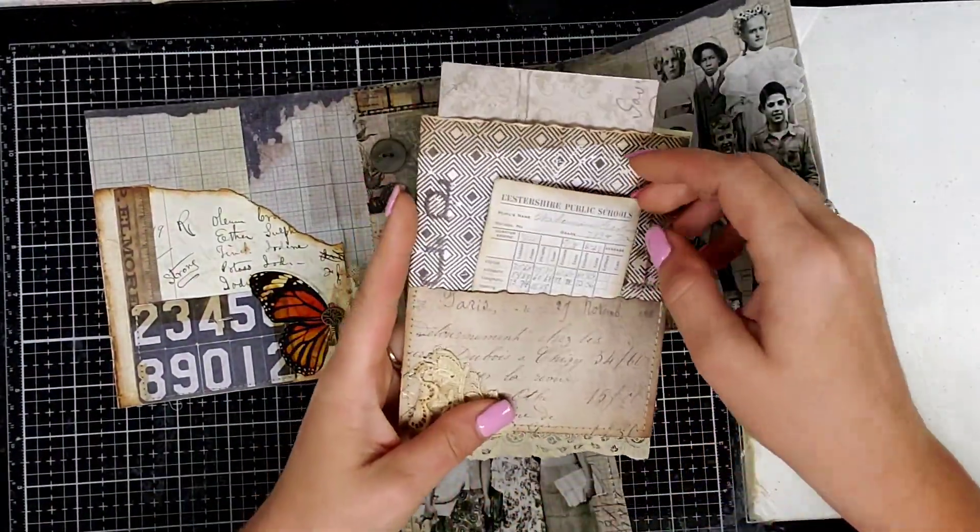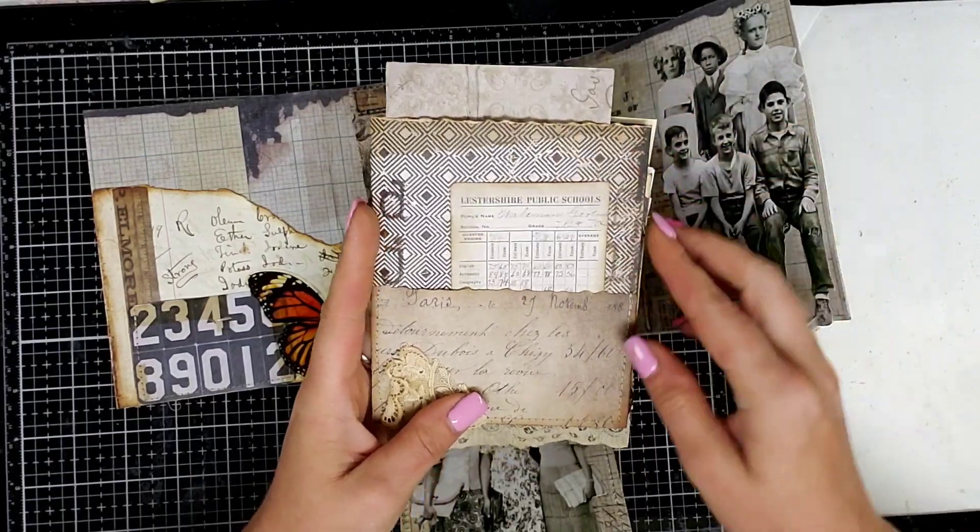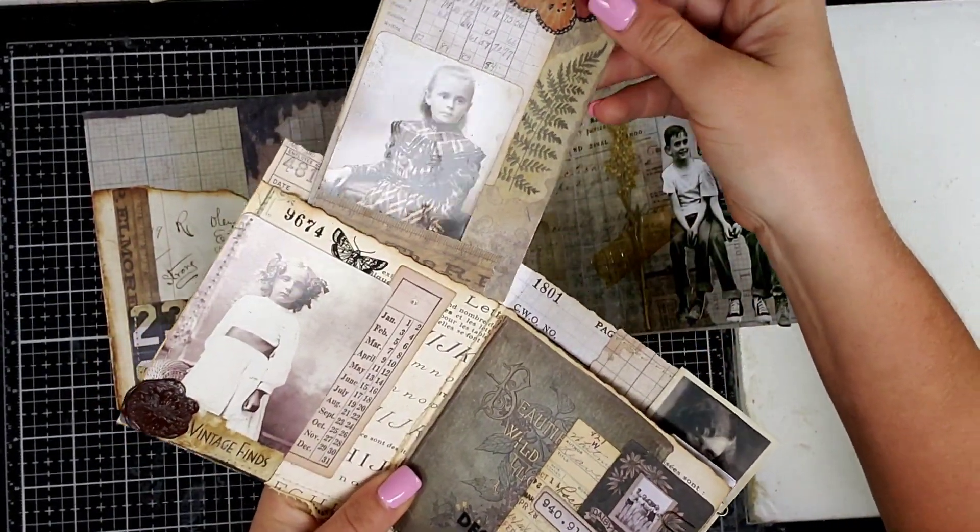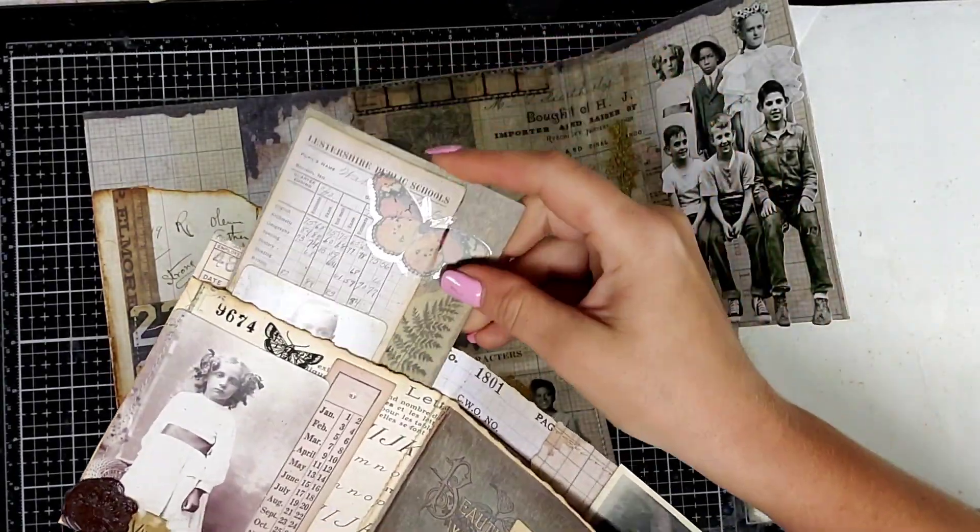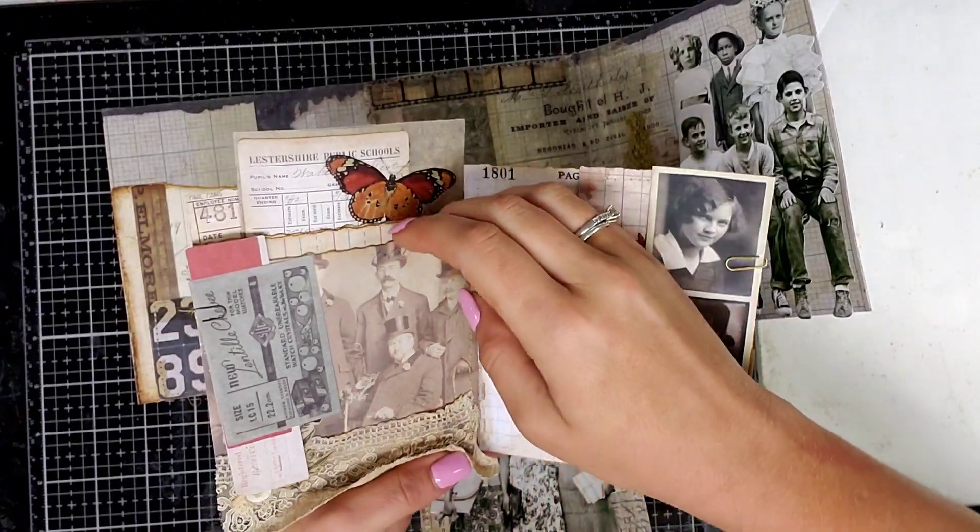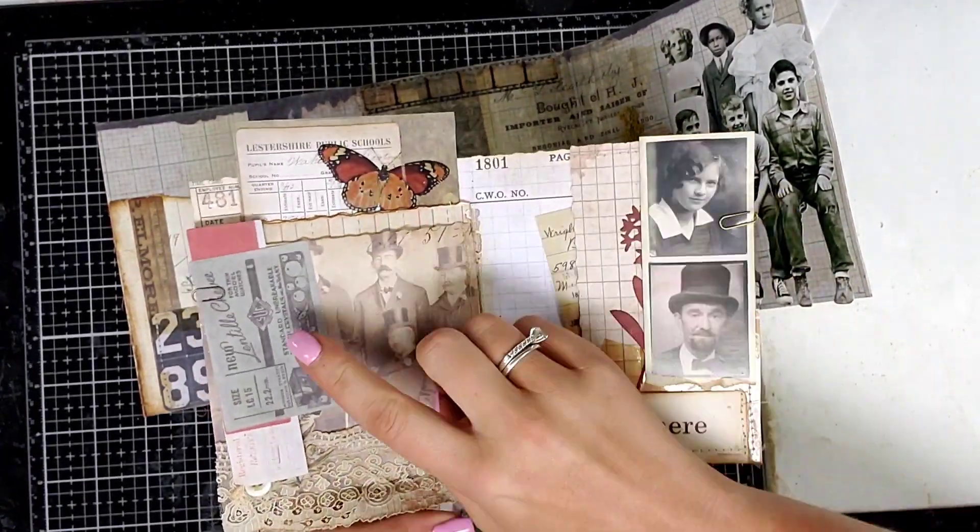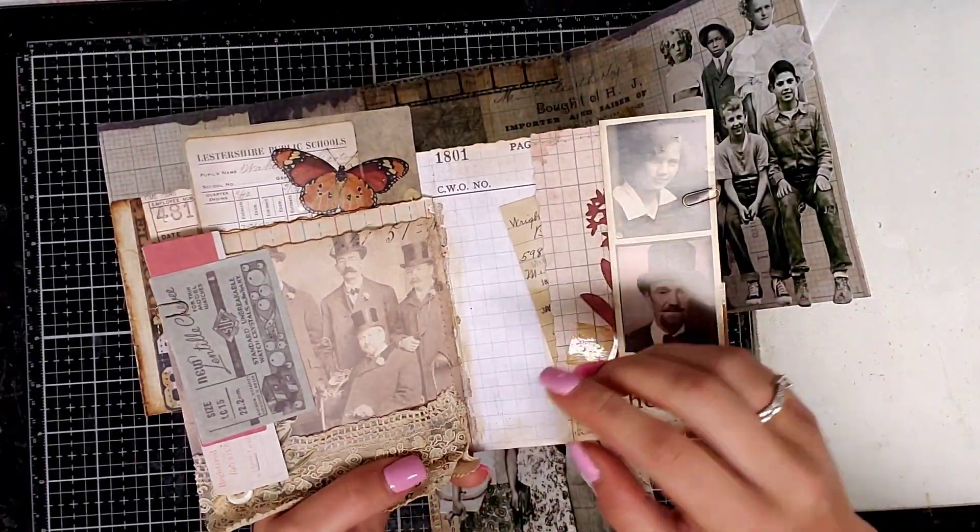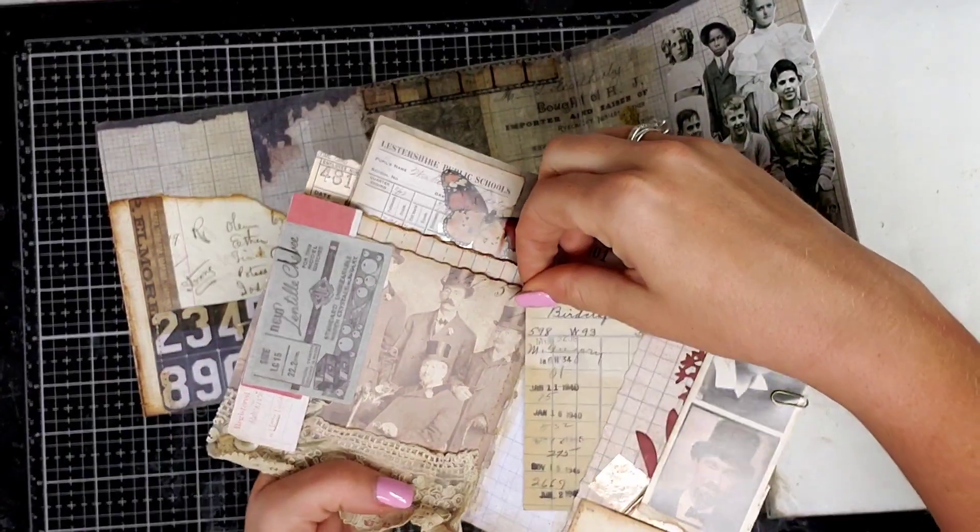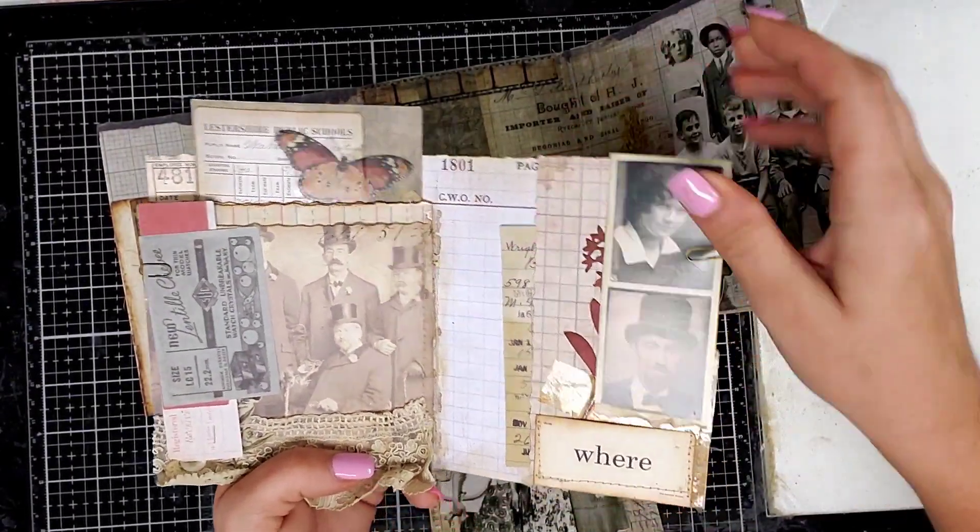And then I have this cute little journal with a library card tucked in there. Over here I have a pocket with a journaling card that I made tucked in there. This is also a pocket - I just have some tickets paper clipped on the side. I have another pocket over here, and that's the mini journal.